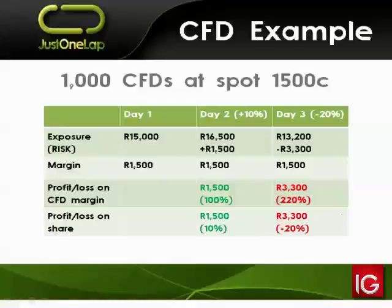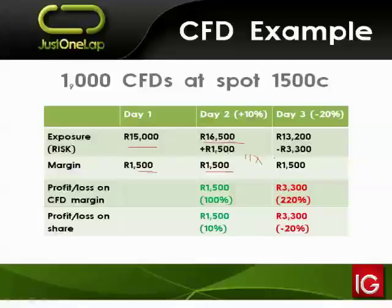We can also see the change in gearing. At the open, gearing is 10: 1,500 divided into 15,000. On day two, you're still dividing by 1,500 but into 16,500 — gearing has gone up to 11 times. On day three, with a value of 13,200 divided by the margin requirement, gearing has come down to 8.8. So gearing is constantly dynamic.